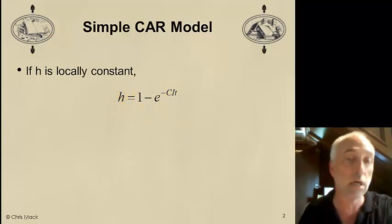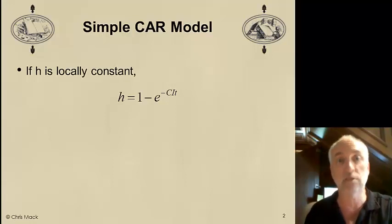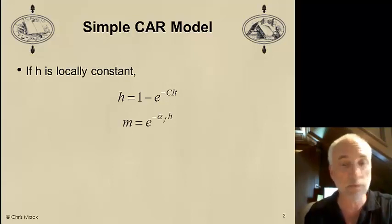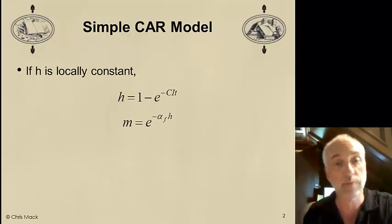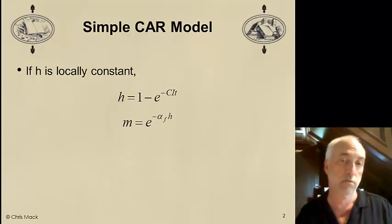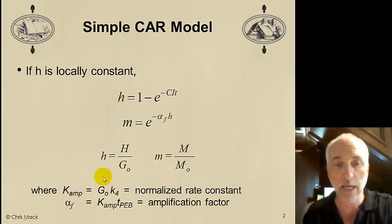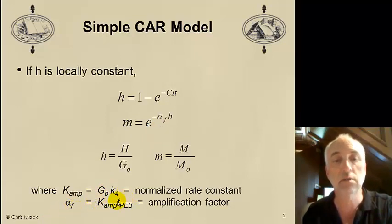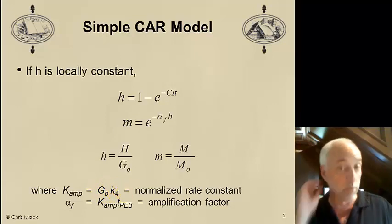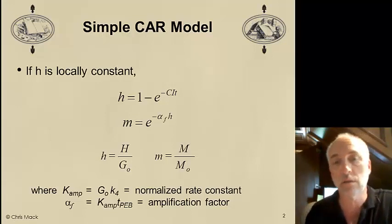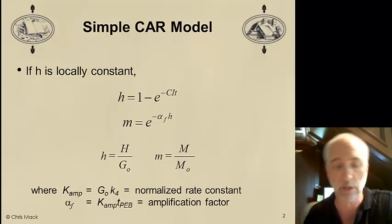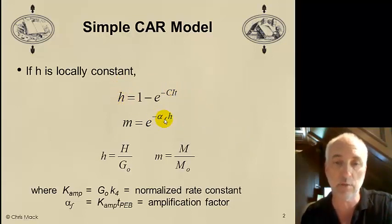We can determine the relative amount of acid generated upon exposure. If this relative amount of acid stays constant during the post-exposure bake, then we can derive an expression for little m, the relative concentration of blocked or protected sites in the polymer. Little m represents the relative concentration of the dissolution inhibitor. Using these relative concentrations, little h and little m, we can define a constant alpha sub f, called the amplification factor — the amplification rate constant times the PEB temperature.